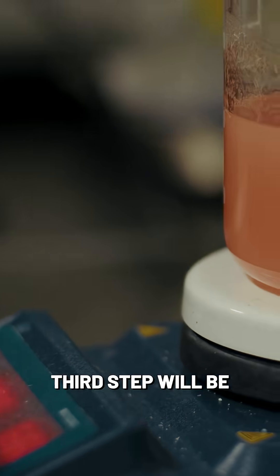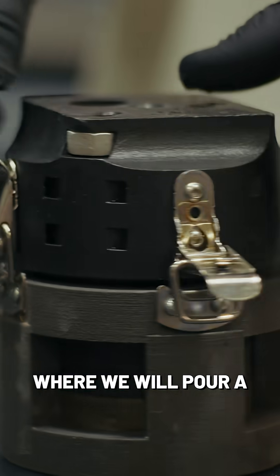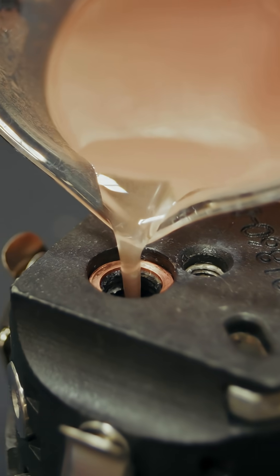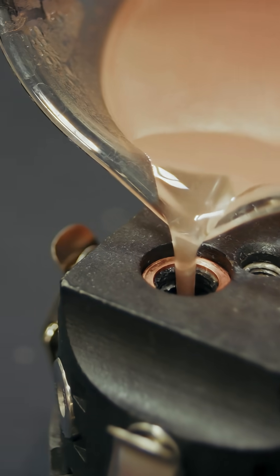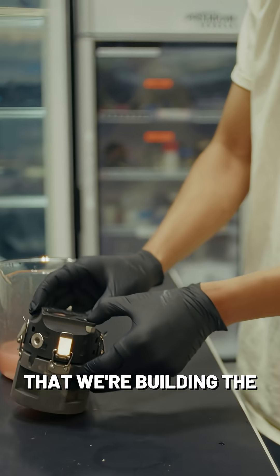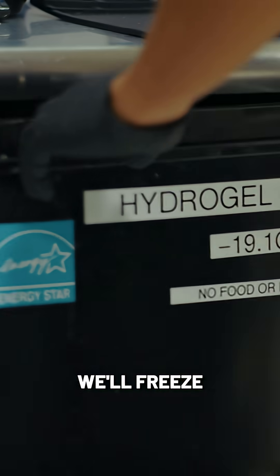Third step will be assembling the brain. That starts actually the night before, where we will pour a custom hydroshell into a proxy mold. And the mold is built from the MRI of the patient that we're building the brain from. We'll freeze that overnight.